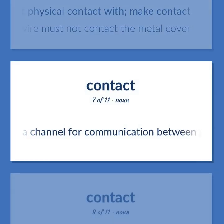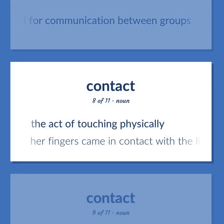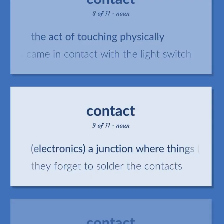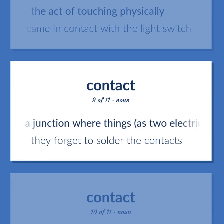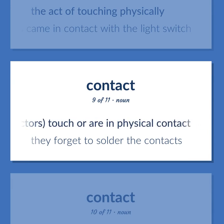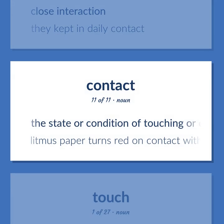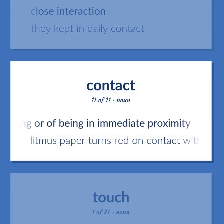CONTACT: A channel for communication between groups. The act of touching physically. 'Her fingers came in contact with the light switch.' Electronics — a junction where things, as two electrical conductors, touch or are in physical contact. 'They forgot to solder the contacts.' Close interaction — 'They kept in daily contact.' The state or condition of touching or of being in immediate proximity. 'Litmus paper turns red on contact with an acid.'